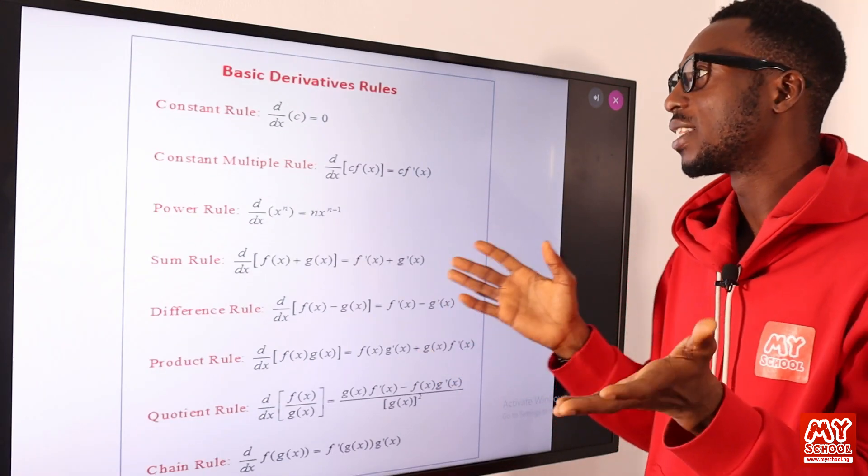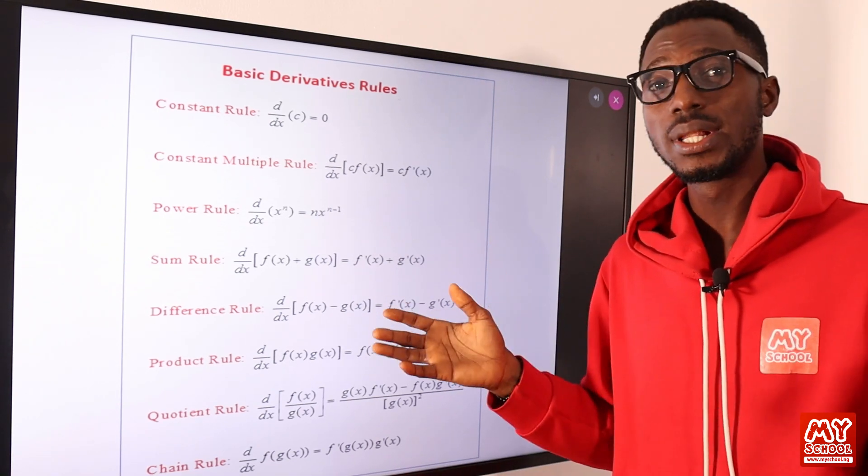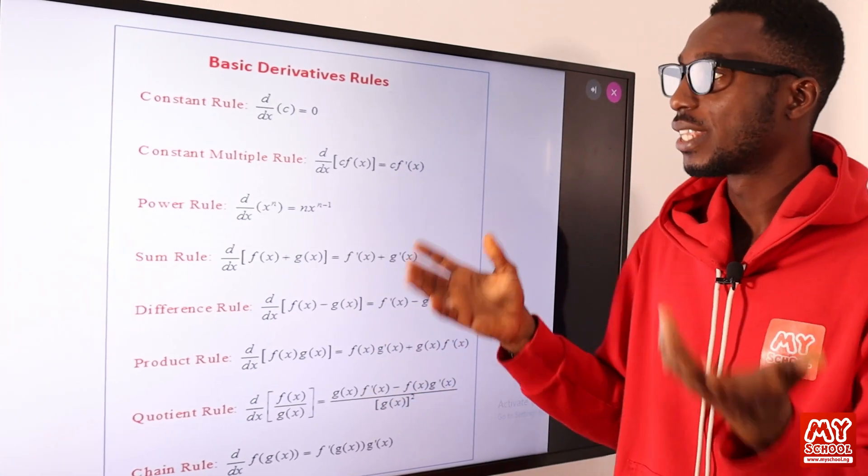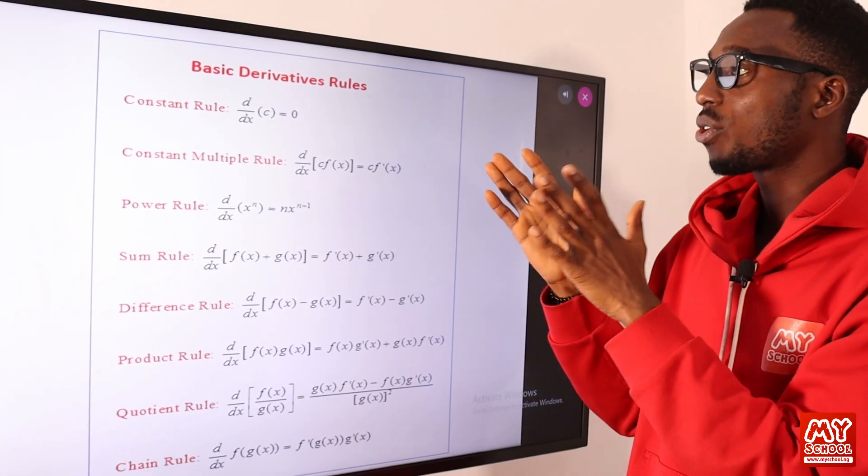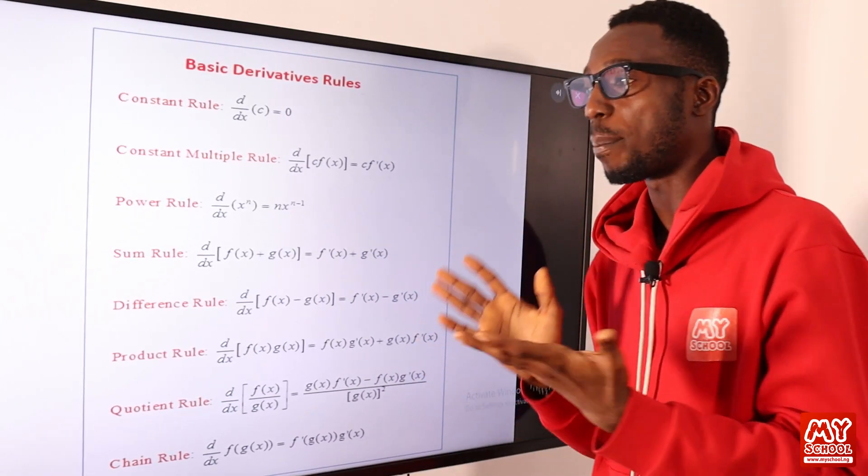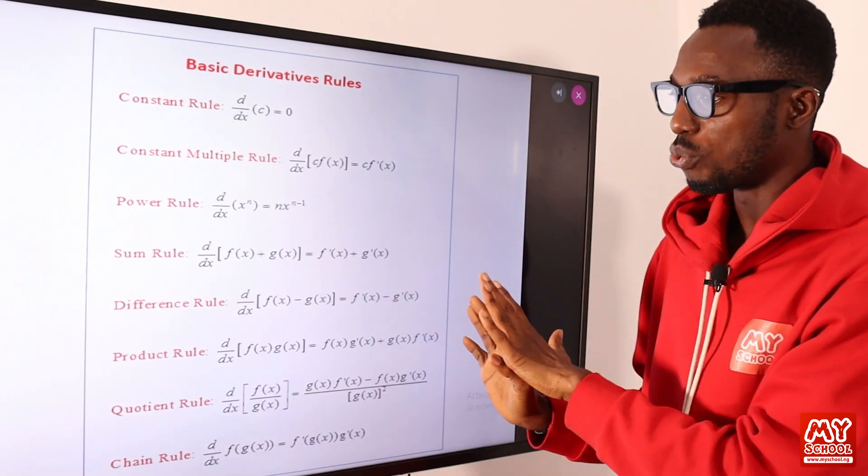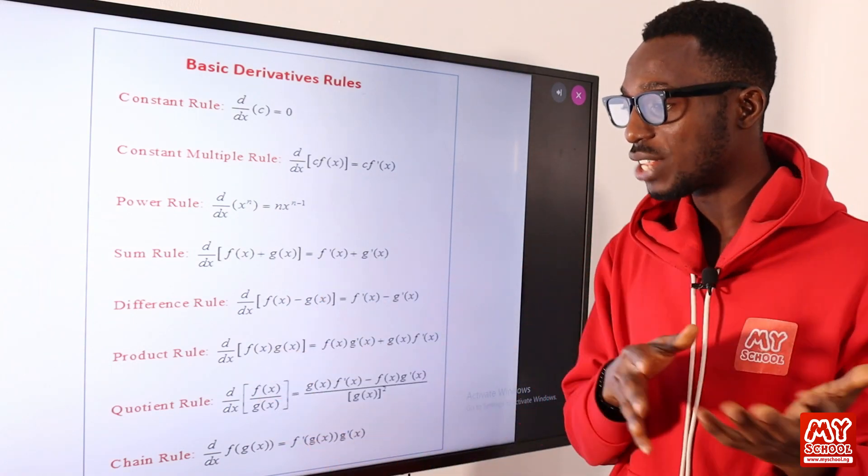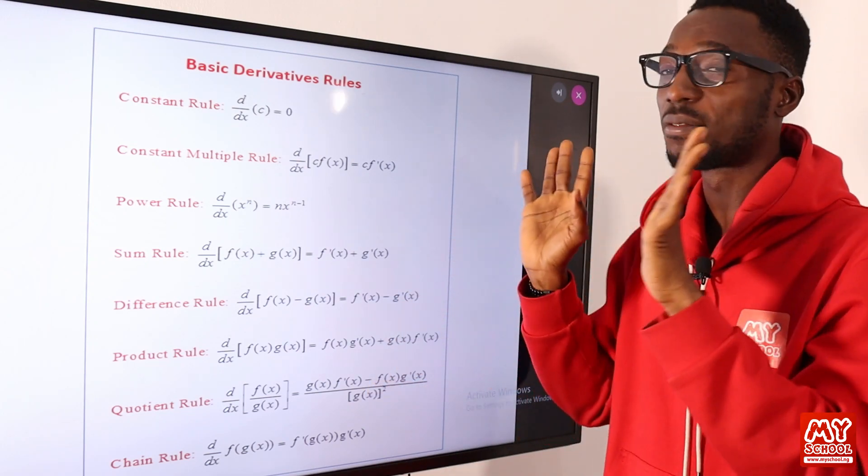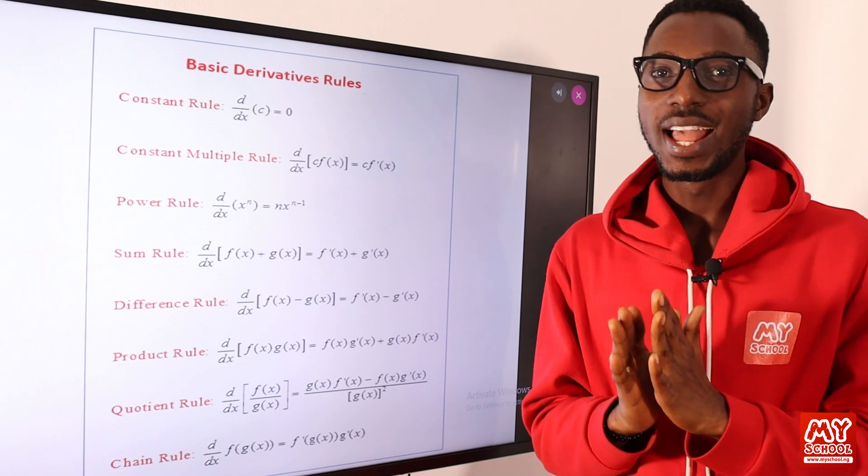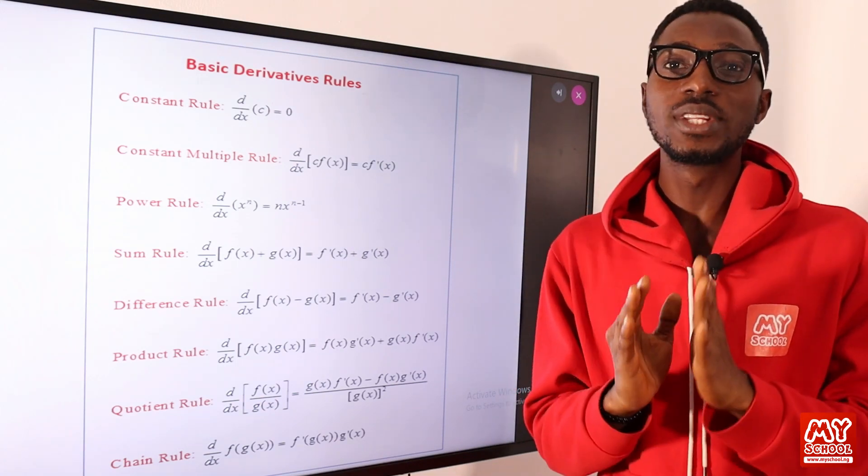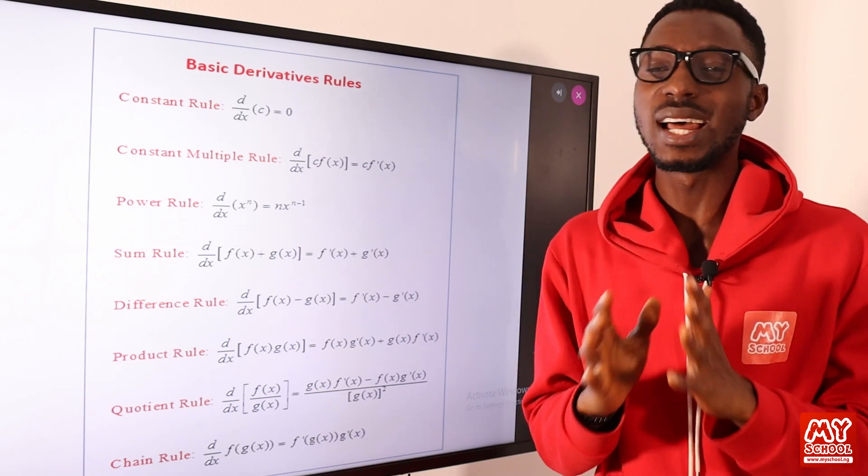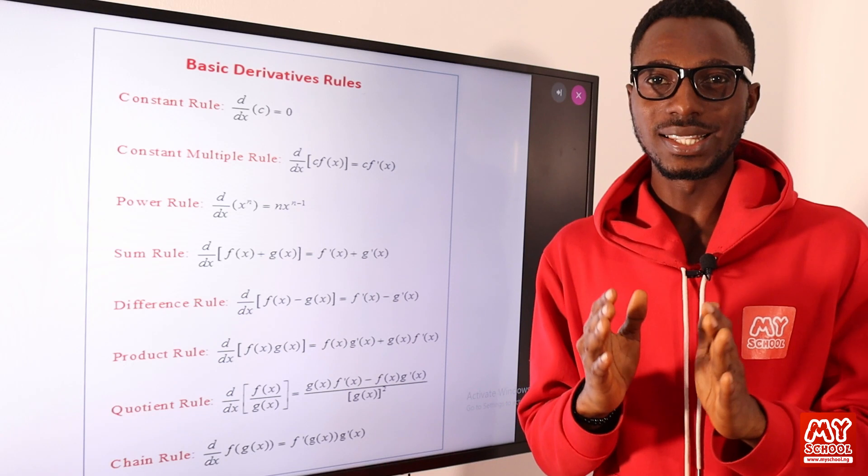Look at some basic derivative rules, or differentiation rules. We have the constant rule, the constant multiple rule, the power rule, the sum rule, the difference rule, the product rule, the quotient rule, and the chain rule. These rules are very easy to understand and apply. I just need you to stick with me throughout this video lesson because we are going to use examples and references that are very easy to understand and practice.